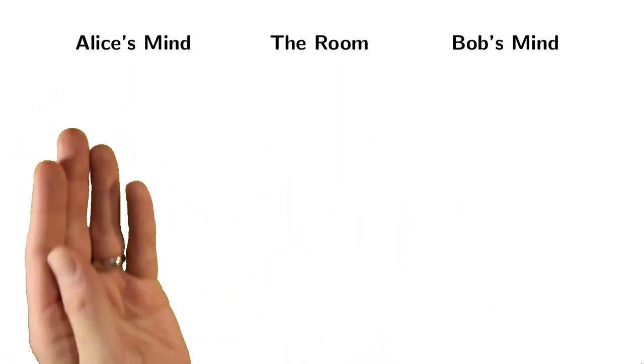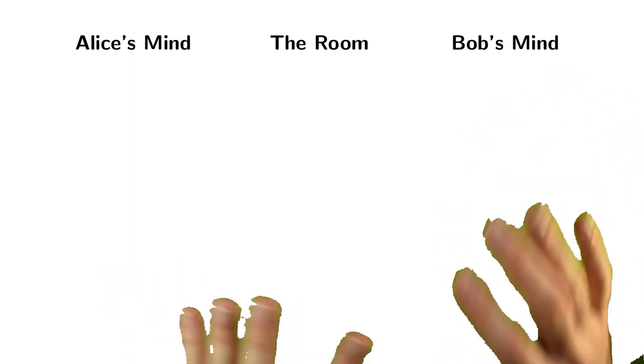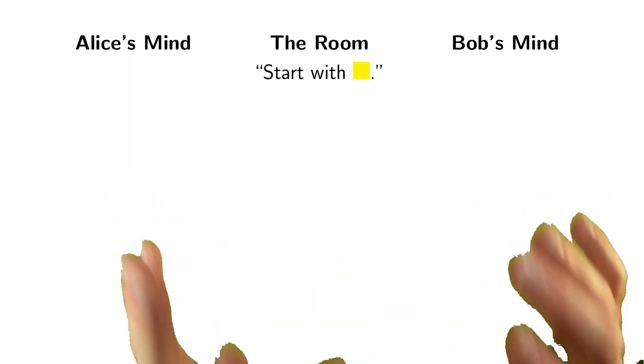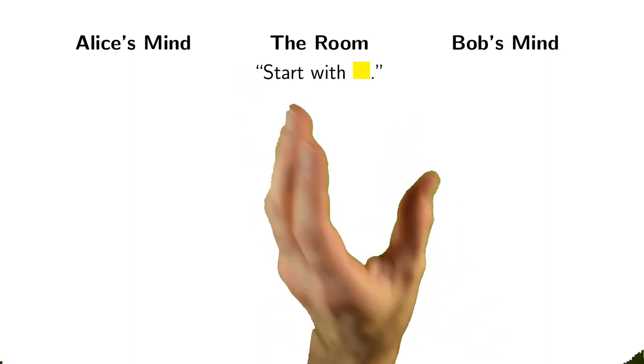Over here, I've got Alice's mind. That's just the stuff that Alice knows. And over here, I've got Bob's mind. That's just the stuff that Bob knows. So Alice and Bob will communicate in the public space in the room and Alice and Bob will agree to start with the color yellow.